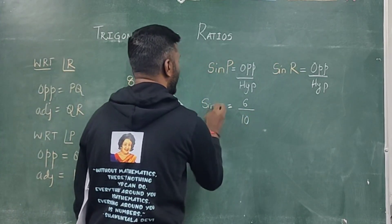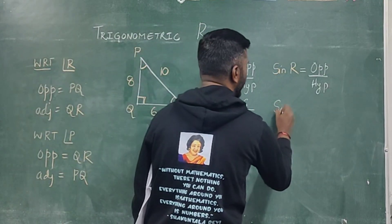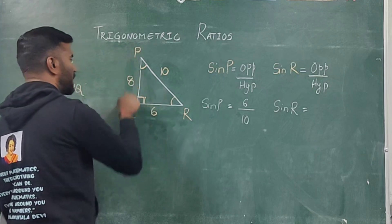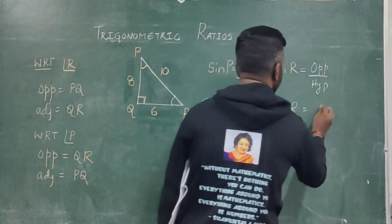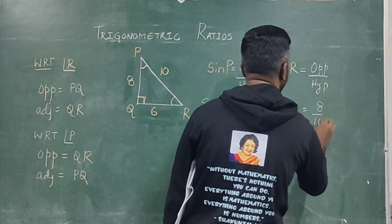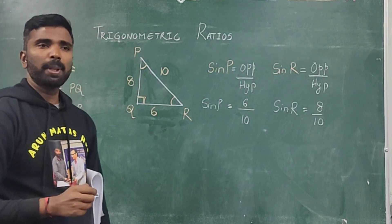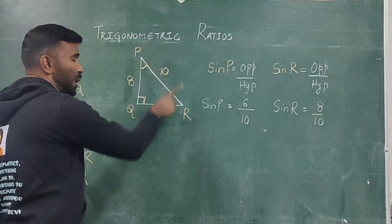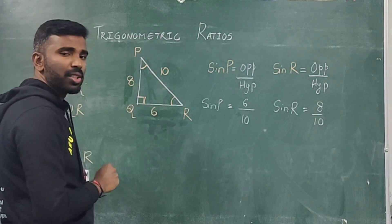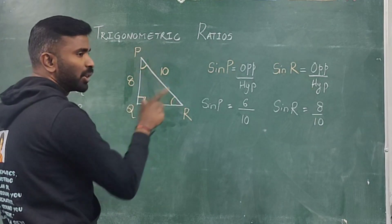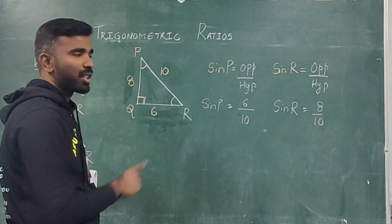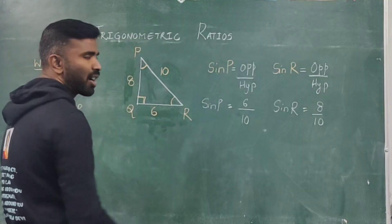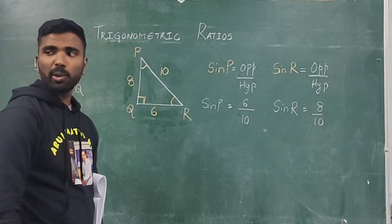This is a simple two-mark question. They will give you the values. You just need to write down the ratios — for writing the ratios you get half a mark, and for writing the correct values you get the other half mark. If they ask tan P: tan is opposite by adjacent. With respect to P, opposite is 6 and adjacent is 8, so tan P = 6/8.